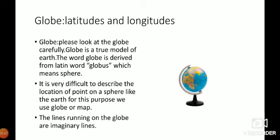It is very difficult to describe the location of a point on a sphere like earth because earth is very big. For this purpose, we will use globe or maps as a reference point. The lines running on the globes are imaginary lines. There are so many imaginary lines on the globe.